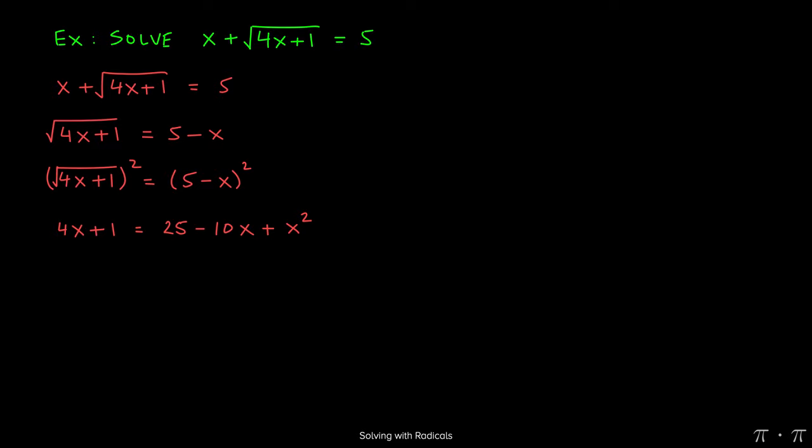At this stage, we recognize that we have a quadratic equation, indicated by the presence of the x-squared term on the right-hand side. These equations can be solved by factoring by first setting the equation equal to 0. So we can take the terms on the left-hand side, the 4x and the 1, and subtract them over to the right.